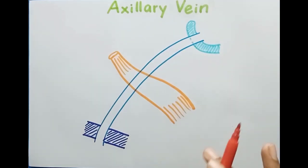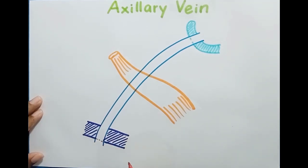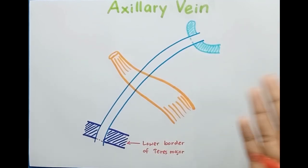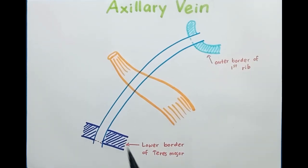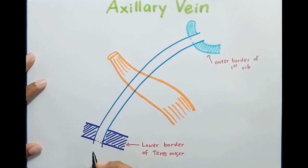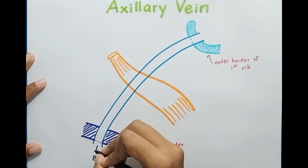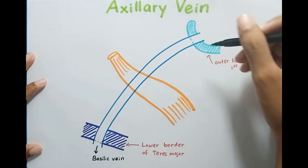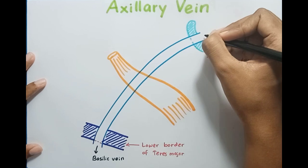The axillary vein commences from the lower border of teres major, and terminates at the outer border of the first rib. The axillary vein is a continuation of the basilic vein — you can see the basilic vein below the lower border of teres major. After the outer border of the first rib, this vein continues as the subclavian vein.